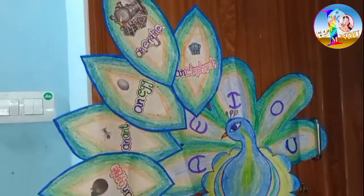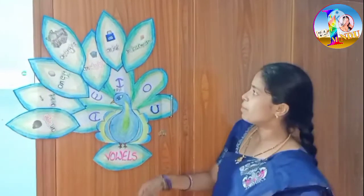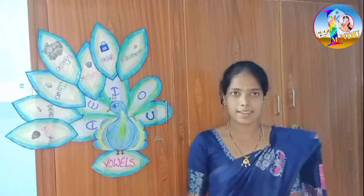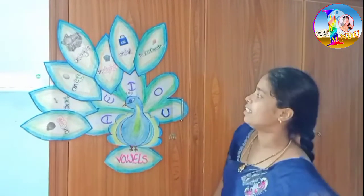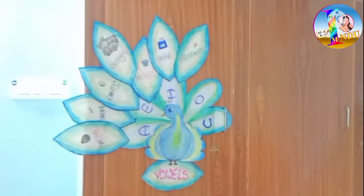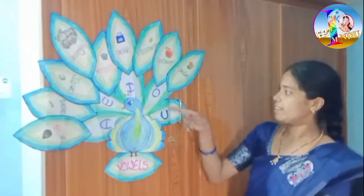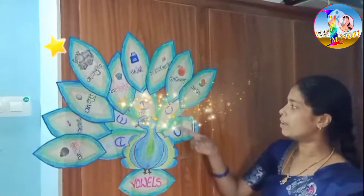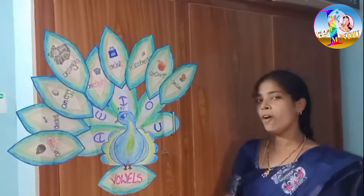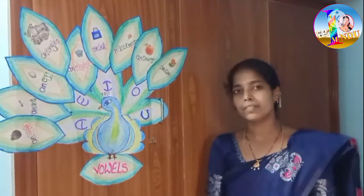Let us see examples of the vowel sound of I. The examples of the I sound: an ant and an ice cream. Now let us see the examples of the O sound: an orange and an oval.